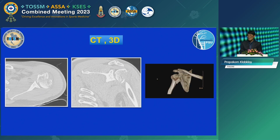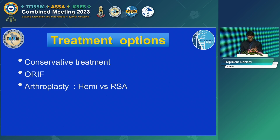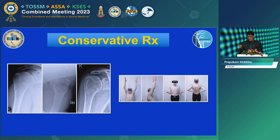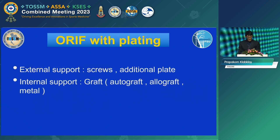For treatment options of head-split fracture, there is a role for conservative treatment, and of course ORIF for younger patients, as well as arthroplasty — choosing between hemi-arthroplasty and reverse shoulder arthroplasty. Conservative treatment is reserved for very small displacement, with good results for minimal displacement cases. For fixation in younger patients, we use external support such as screw fixation or additional plating, and also internal support such as autograft, allograft, or metal support.